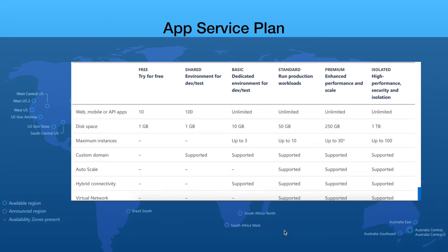These are the different App Service Plan types. The free tier offers a maximum of up to 10 applications with 1 GB disk space. Shared environment instances offer a maximum of up to 100 applications with 1 GB disk space. Depending on the tier you choose, you get different offerings. For example, the Standard tier — recommended for production workloads — gives you an unlimited number of web apps, 50 GB disk space, up to 10 scaling instances, custom domain, auto scaling, hybrid connectivity, virtual network, and more.